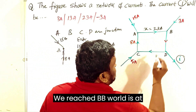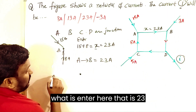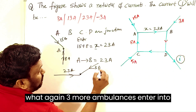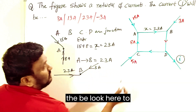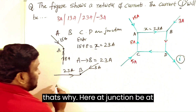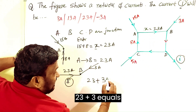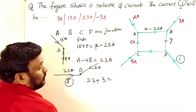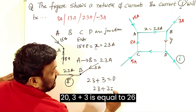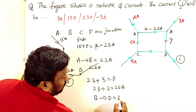We reach junction B. At junction B, 23 amperes is entering and 3 more amperes is also entering from another direction. At junction B, the sum of currents entered is 23 plus 3, which equals Y. So from B to D, the current going is 26 amperes.